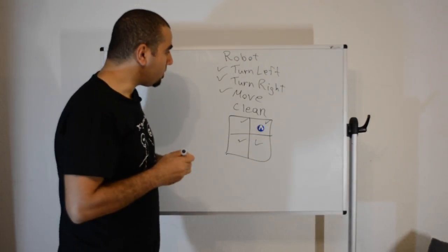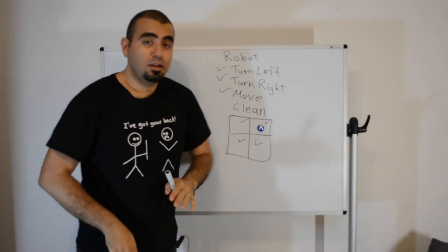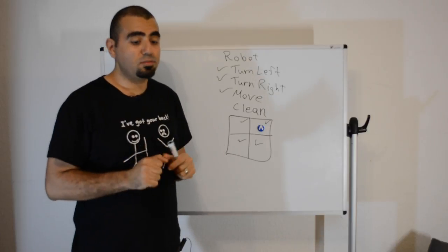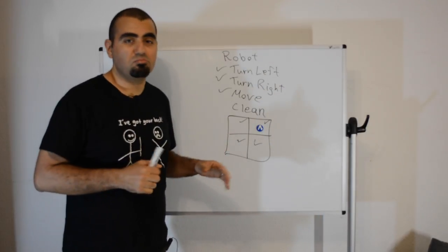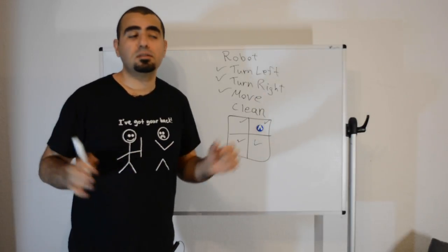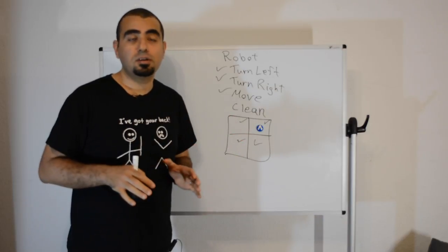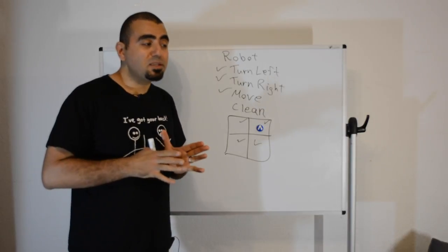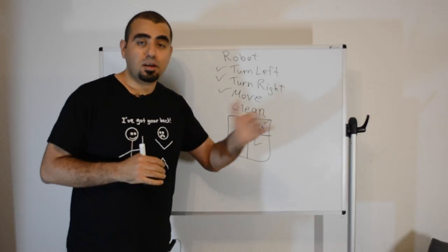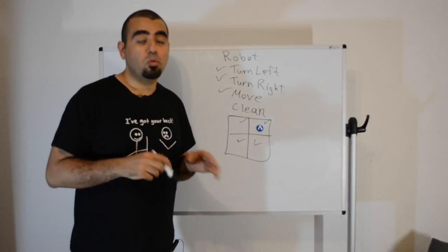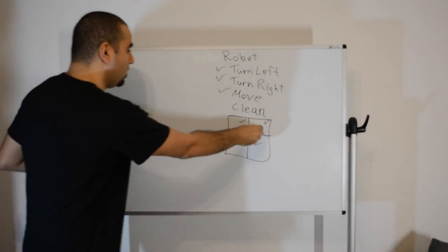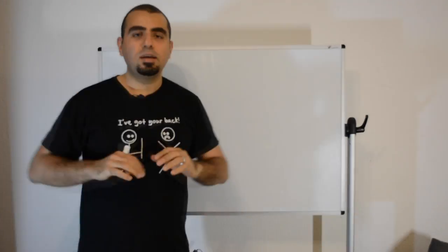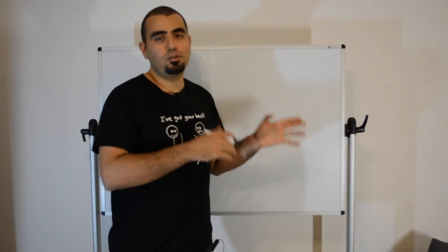Before jumping into the solution, let's study some basic concepts. Usually when you have a matrix like a room, you don't know how big it is or whether there are obstacles. We need an algorithm that explores the room, stops when there's an obstacle, and doesn't clean any square more than once. Every matrix problem is essentially a graph.